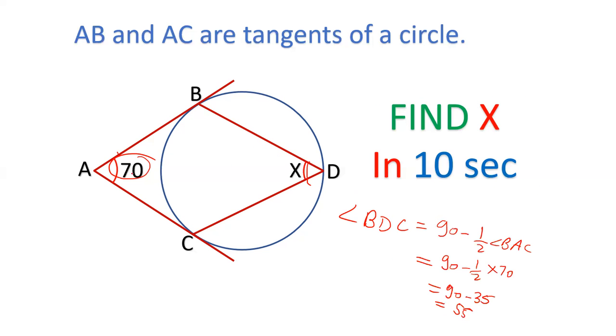So if I change this value from 70 to 50, the value of X will be 90 minus half of 50. 90 minus 25 is 65. So whatever the value of this is given, we can find the value of X.